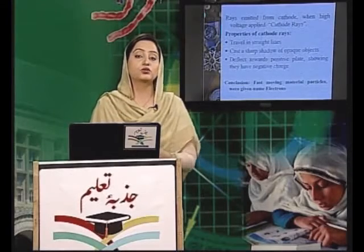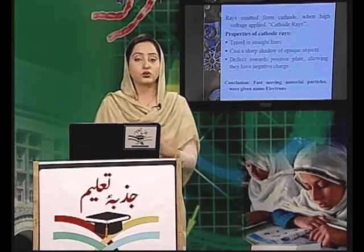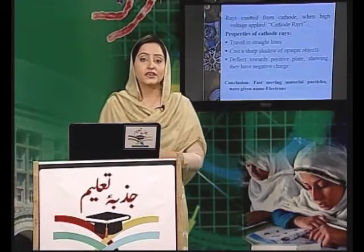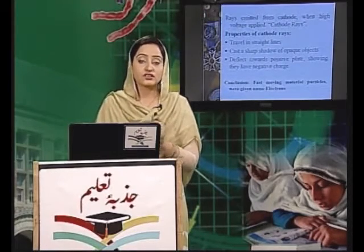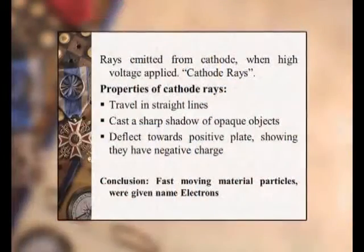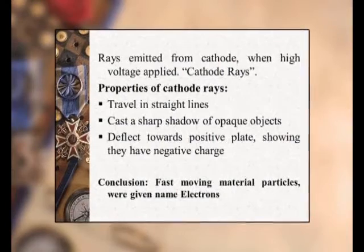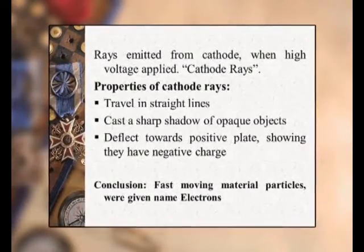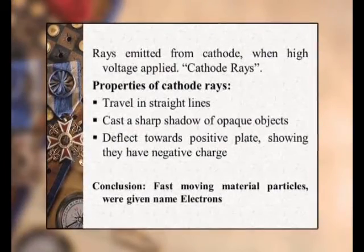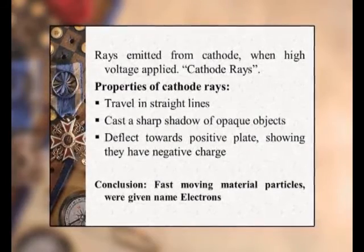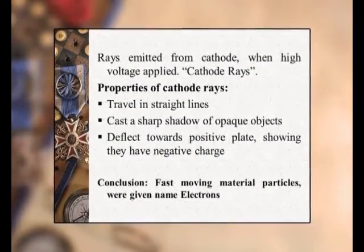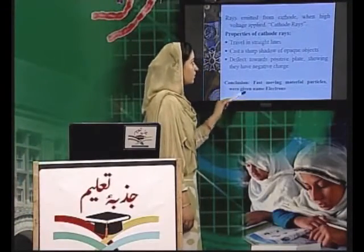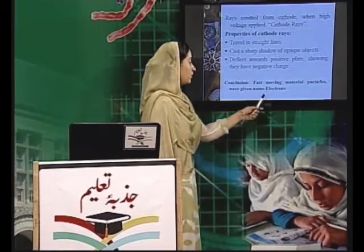उस वक्त उन्होंने इसको cathode ray के नाम से identify किया, कि वो rays जो cathode electrode से निकल रही हैं उन्हें cathode rays नाम दिया। जब उसकी properties study की गईं तो देखा गया कि cathode rays straight line में travel करती हैं, और अपने रास्ते में आने वाले हर opaque object का shadow बनाती हैं। इसके इलावा जब इन rays को electric और magnetic field में भेजा गया तो ये positive plate की तरफ divert हुईं, जिससे पता चला कि इन पर negative charge है। Sir William Crookes के experiment से यह मालूम हुआ कि cathode rays में fast moving material particles यानी electrons हैं, जो basically atom का एक छोटा particle है।